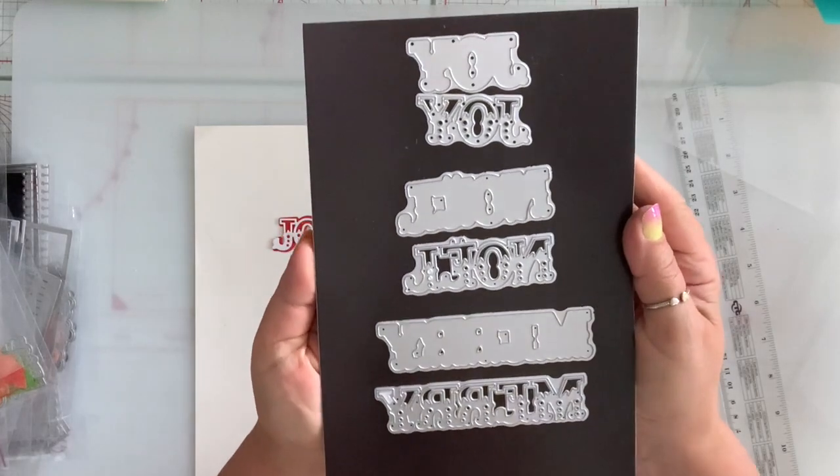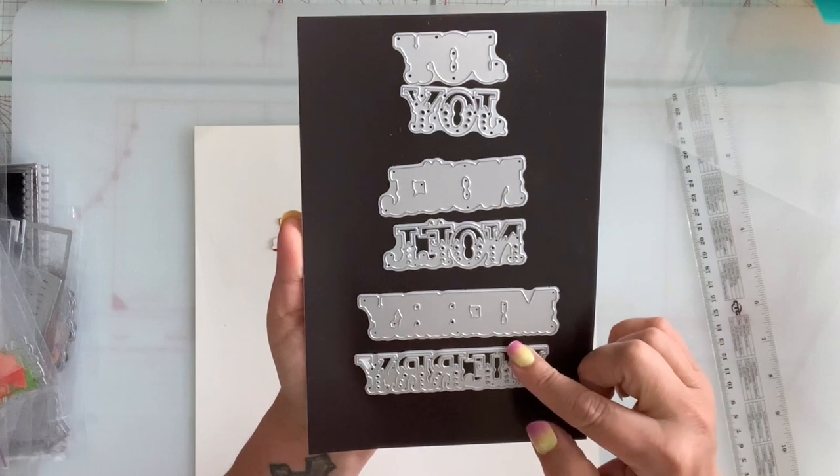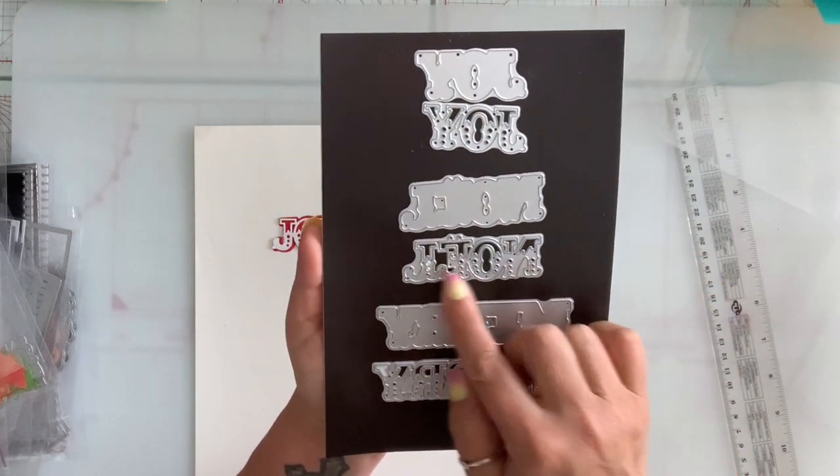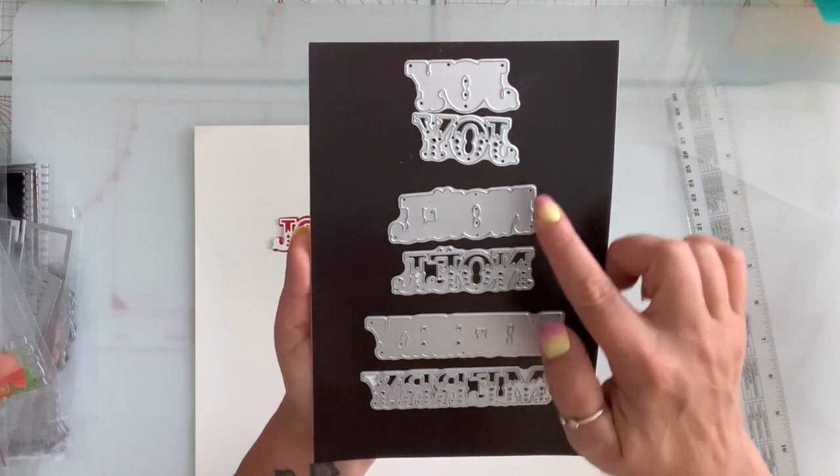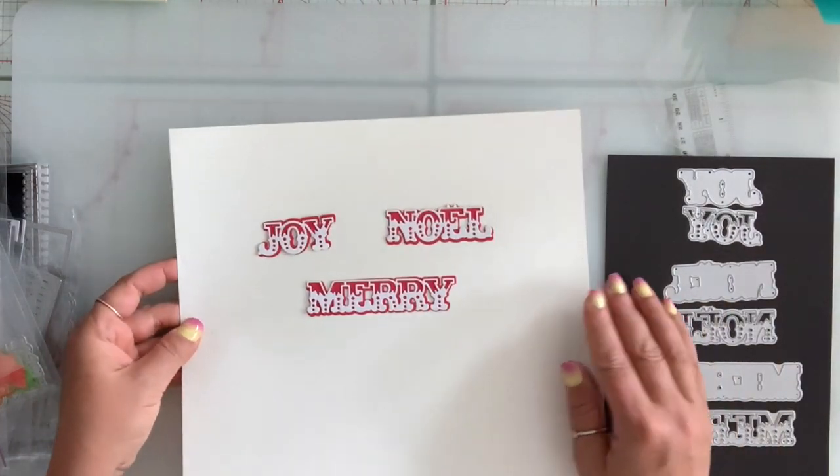Next, I have these Christmas word dies and all three of these come together in a set. So we have Joy, Noelle and Mary and they come with the shadow and this is what they look like.